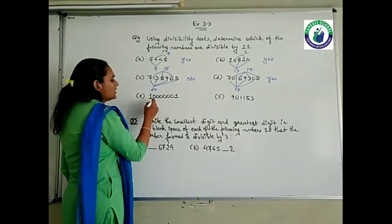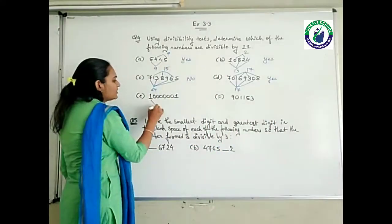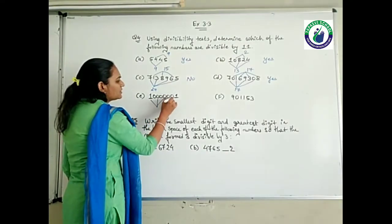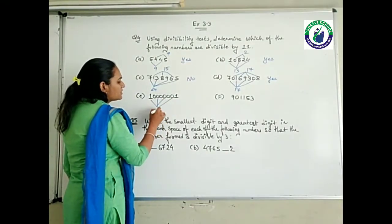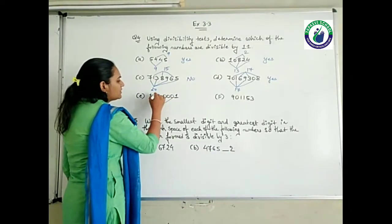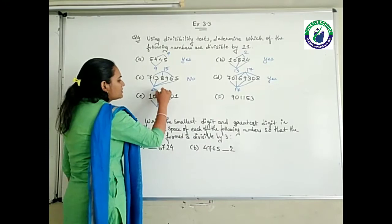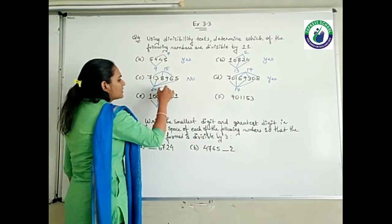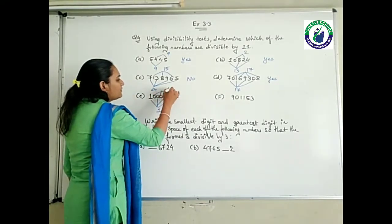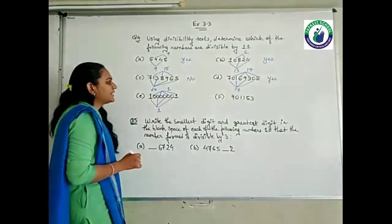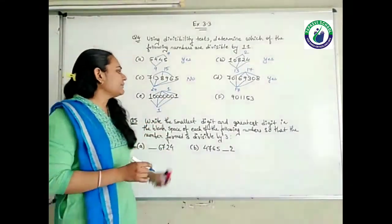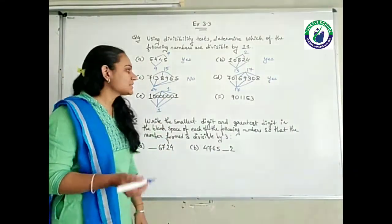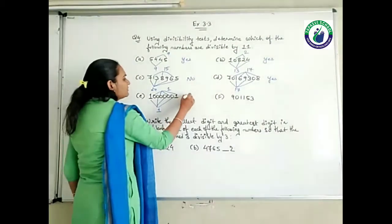Next one: 10000001. Adding: 1, 0, 0, 0 — odd places give 1. Even places: 0, 0, 0, 1 — also give 1. The difference of 1 minus 1 comes as 0. So yes, it is divisible by 11.